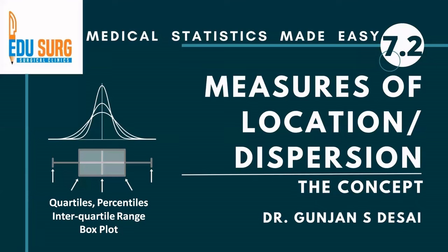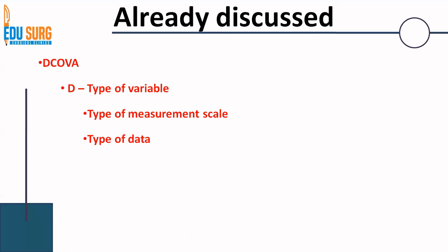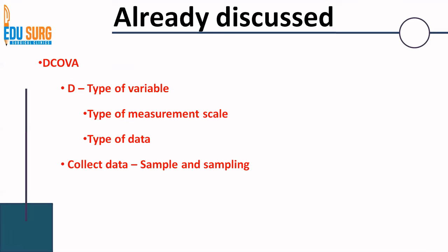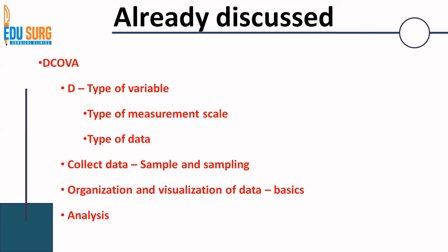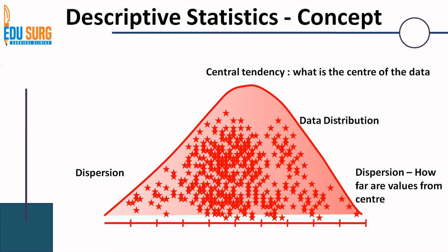Hello everyone and welcome to Air Research Clinics. Today we will continue our discussion on medical statistics. This is going to be a very interesting video because with this video we will be nearly completing most of the concept-based discussions on measures of central tendency, measures of location and dispersion. We have already discussed the DCOVA framework, the type of variables, measurement scales and data, sampling methods, graphical representation of data, and some analytics based on measures of central tendency. Descriptive statistics we also saw in the previous video.